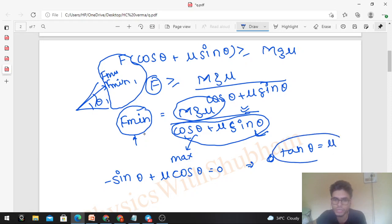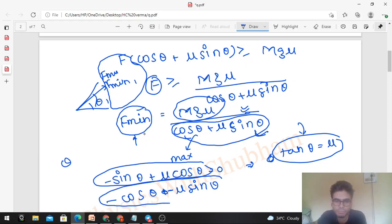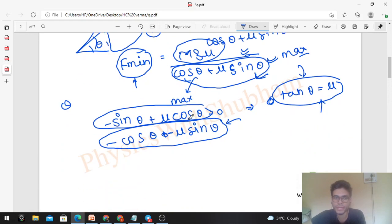At this angle, what is the guarantee that this function is maximized? You can further take the second derivative. The second derivative is -cos θ + μ times -sin θ, which is -cos θ - μ sin θ. For θ between 0 to 90, this is negative, which is less than 0. This is the condition from the second derivative test for the function to be maximum.